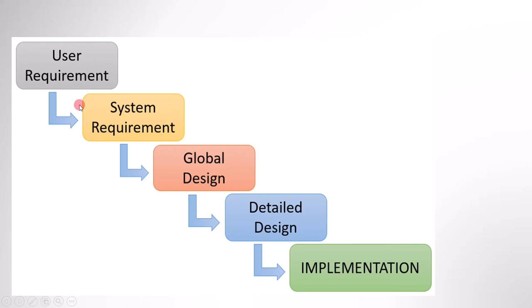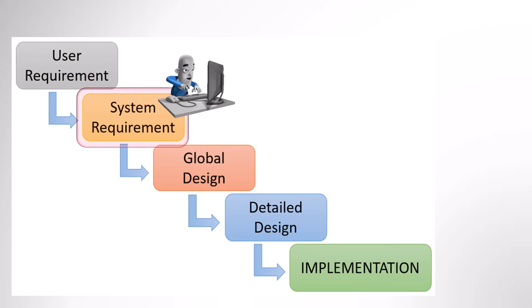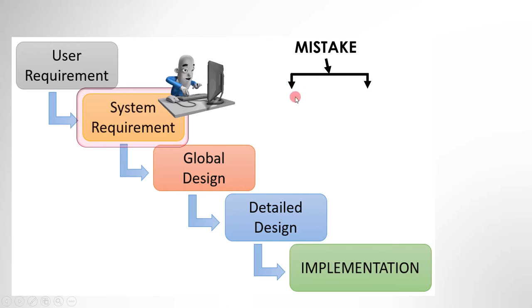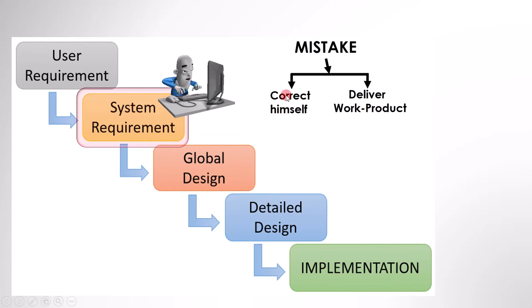Let's understand this with the help of the development lifecycle. Suppose you got the user requirement, and from this the requirement engineer has to write the system requirement. Now suppose while writing the system requirement, the requirement engineer makes a mistake. There are two possibilities: first, he can find it by himself and correct it; second, he delivers the requirement document as a work product to the next stage. In the first case, since the requirement engineer corrected the mistake by himself, it will be referred to as the error. But in the second case, since the error is part of the work product, it will be referred to as a defect.